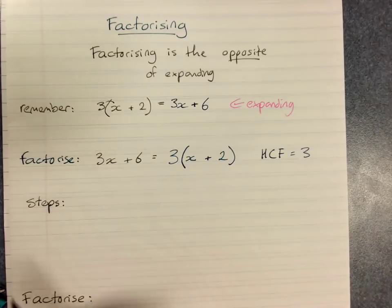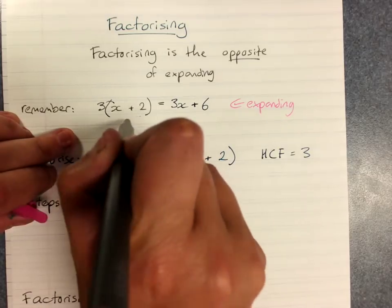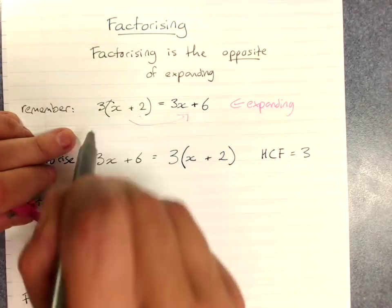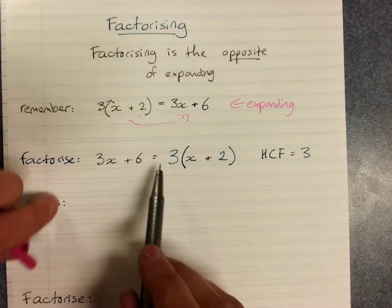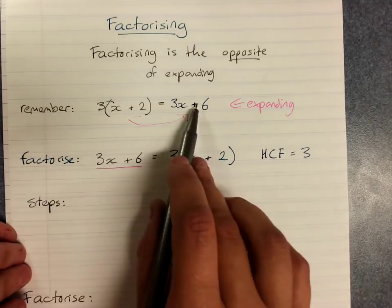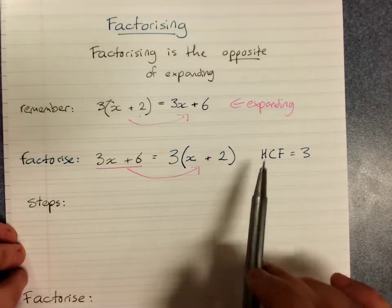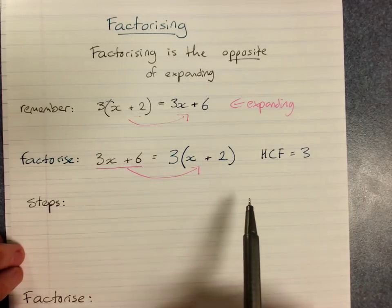So checking, expanding is going from the expression in brackets and taking it out of brackets by multiplying. Factorizing is taking the expression that's out of brackets and putting it back in the brackets by taking out a highest common factor.